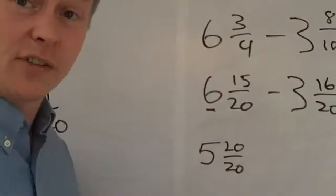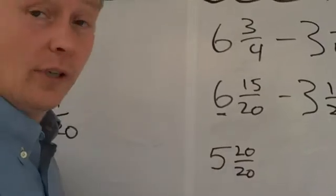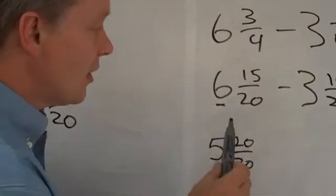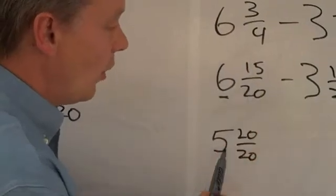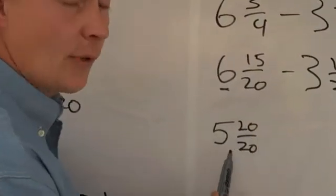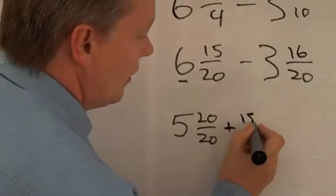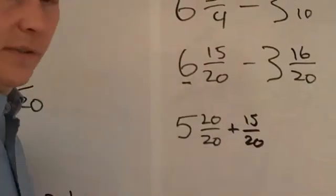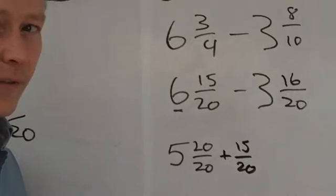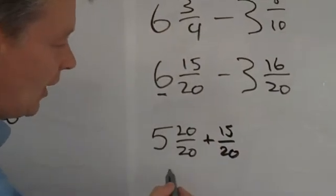Because twenty twentieths is one, and five add one is six. So if we rewrite that, what we've got is five and twenty twentieths, and fifteen twentieths. Does that make sense?